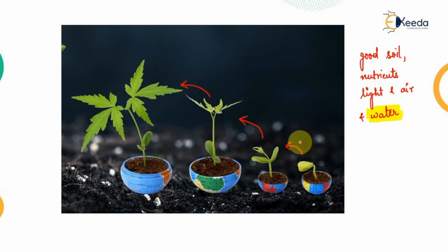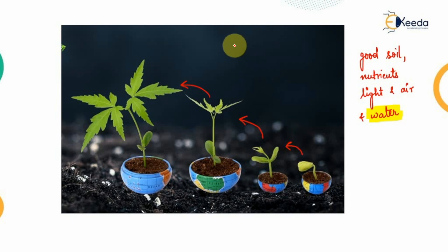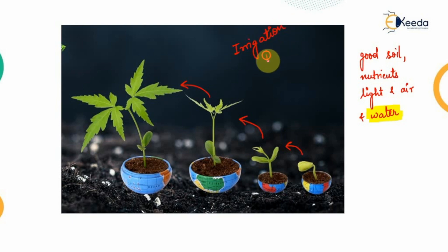To avail the required quantity of water to different crops according to their demands at the time of their requirement is known as irrigation. To provide the different methods with the help of which we can make this suitable arrangement is the branch of engineering known as irrigation engineering.